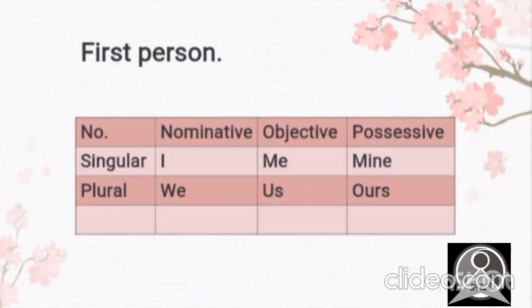The first person is always I and we. When we talk about the singular one, it's I, and when we talk about the plural one, it's we. There are three cases: nominative, objective, and the possessive one. The objective case of I is me and possessive one is mine, and of we, it's us and ours.